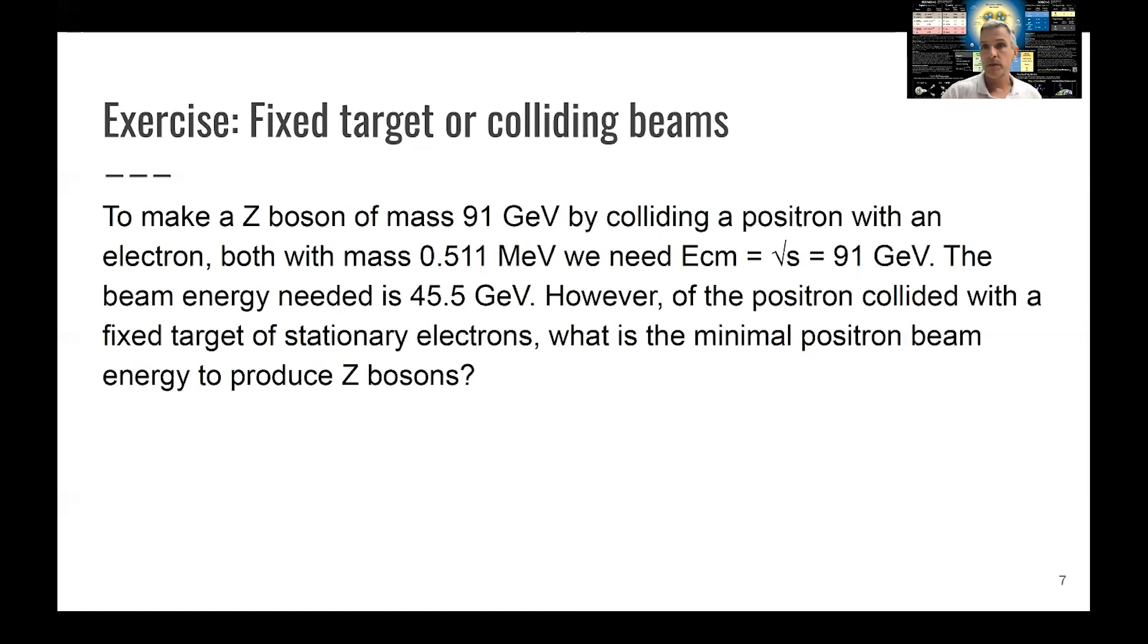So now, imagine somebody would have proposed a fixed target experiment where you have stationary electrons, for example, electrons in atoms, just a gas of some sorts. And then you have produced positrons in a beam, accelerate them and bring them to collision. So the question here now is, how large does the energy of this positron beam have to be in order to produce a Z boson? So again, this is something I would like you to actually explore and write down. Solutions for this example are also in the backup.